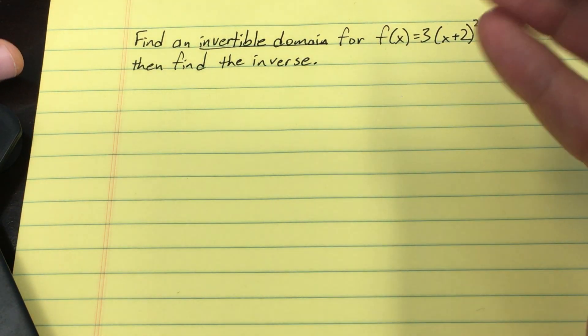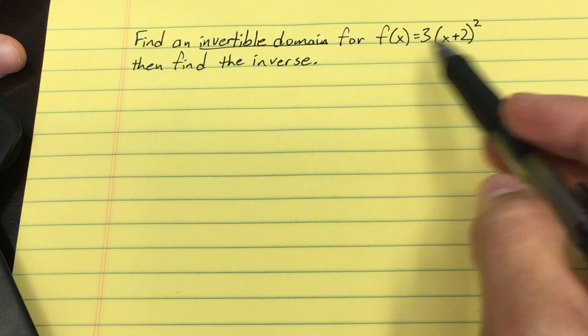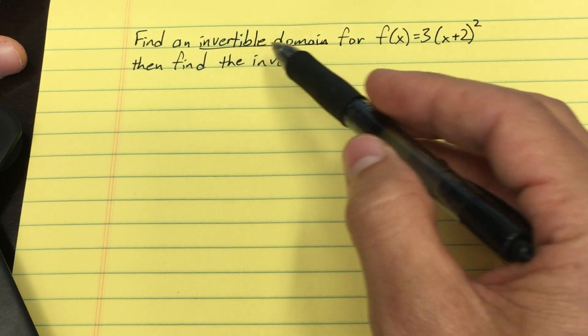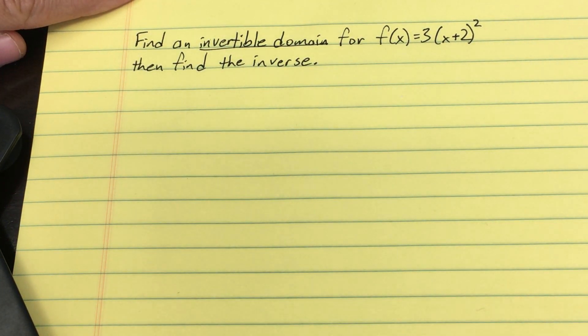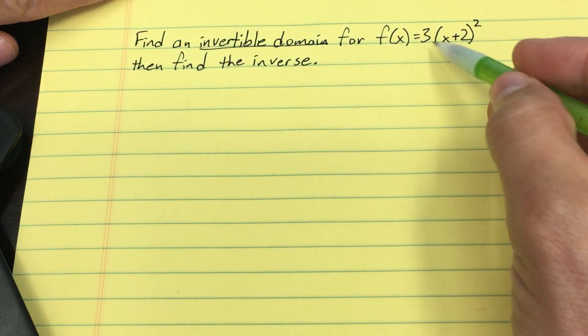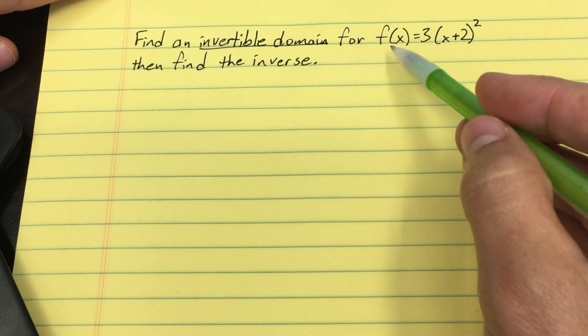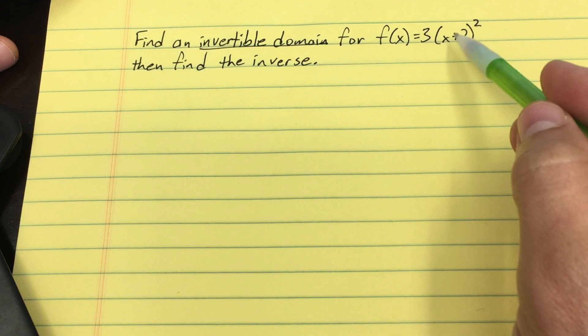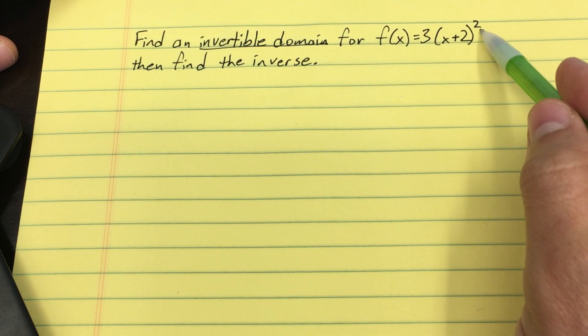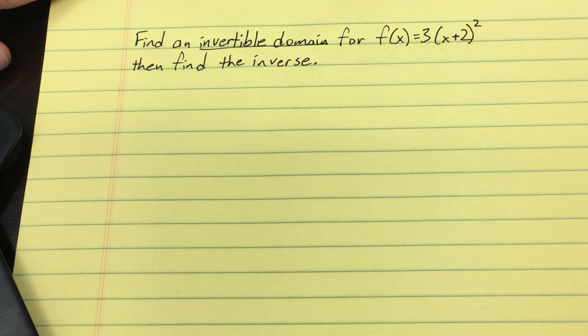Let's have a quick talk about a function that isn't invertible right now, but if we restrict the domain, it can be invertible. So first off, hopefully when you look at this function that we're supposed to find an invertible domain for, f(x) equals 3(x+2)², you see that's a quadratic, must be a parabola.